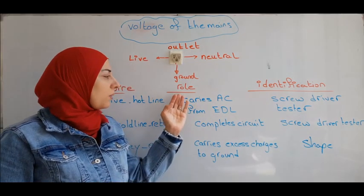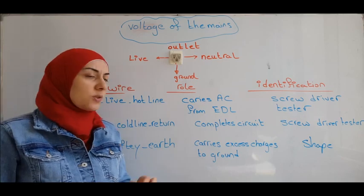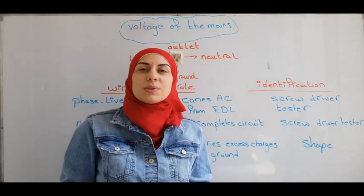The ground, we can know it because it has different shape than the other two, and it's rolled. It carries the excess charges to ground. So it is used for safety.